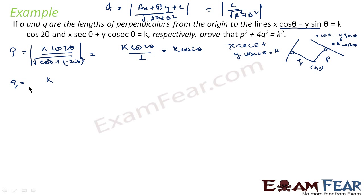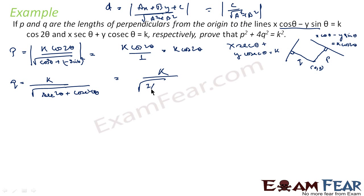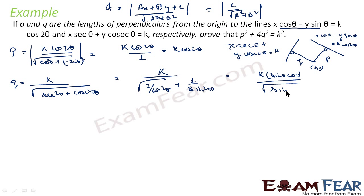For q, similarly applying the distance formula to the second line x·secθ + y·cosecθ = k, we get q = k / √(sec²θ + cosec²θ). Writing sec²θ = 1/cos²θ and cosec²θ = 1/sin²θ, this simplifies to q = k·sinθ·cosθ / √(sin²θ + cos²θ) = k·sinθ·cosθ, since sin²θ + cos²θ = 1.